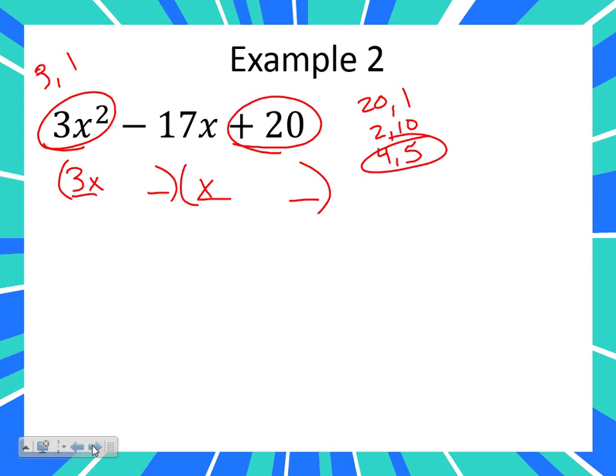What do my signs need to be in order to get a positive at the end but add to be a negative? Let's get to a group consensus. Two negatives. A negative times a negative is a positive, but when you add two negatives, you get a negative.